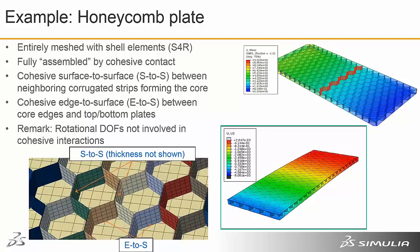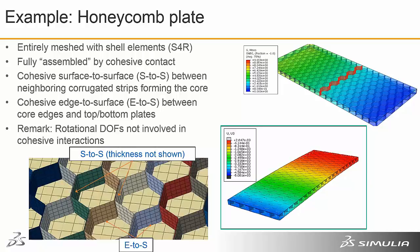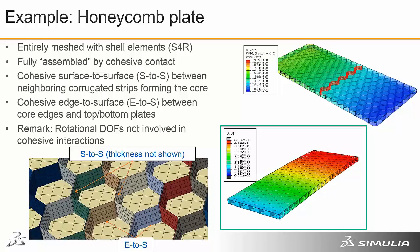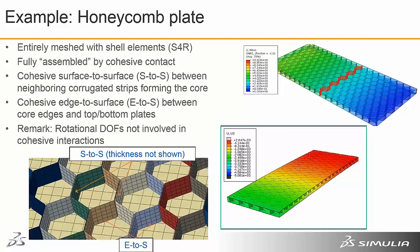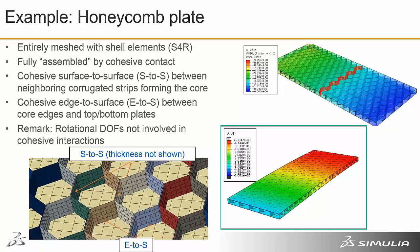A really pretty example of that is a honeycomb plate. The general overall picture doesn't look that exciting, but when you look at the zoomed-in picture, you can see that the proper representation of the honeycomb has been built using shell elements without a continuous mesh. All of the connections between the cells and the outer skins are created using cohesive contact, and that allows very interesting behavior as we load the thing in extreme situations. Cohesive contact can break down and we can look at the way in which the thing collapses progressively.